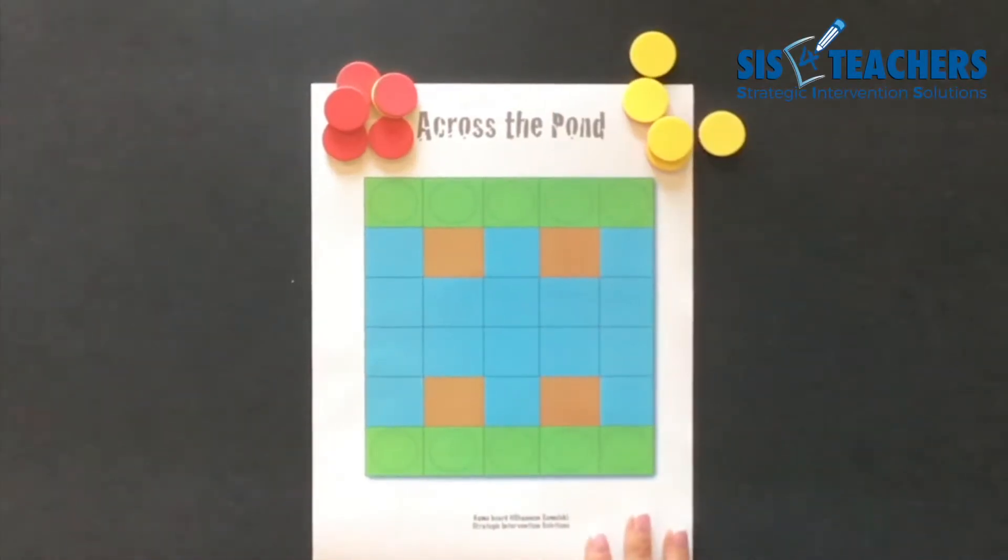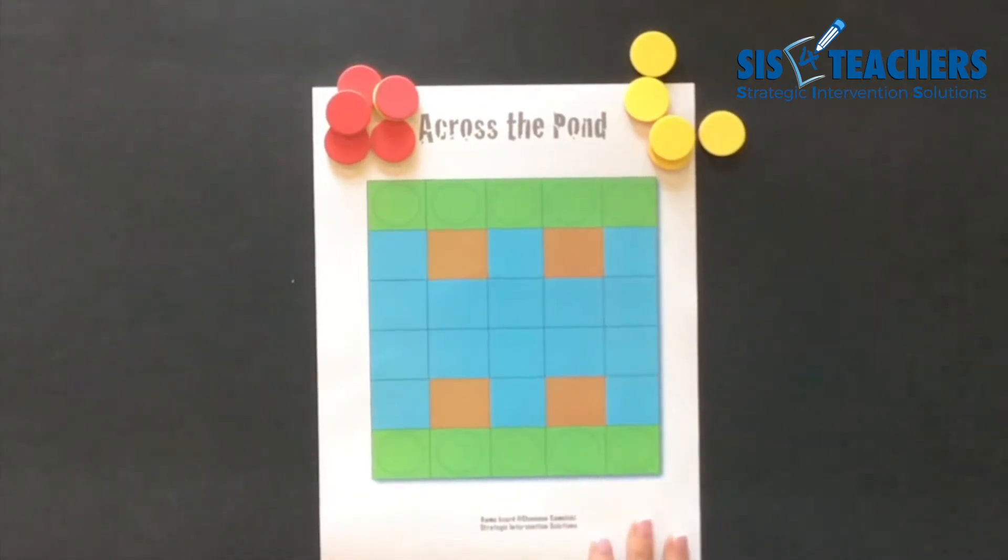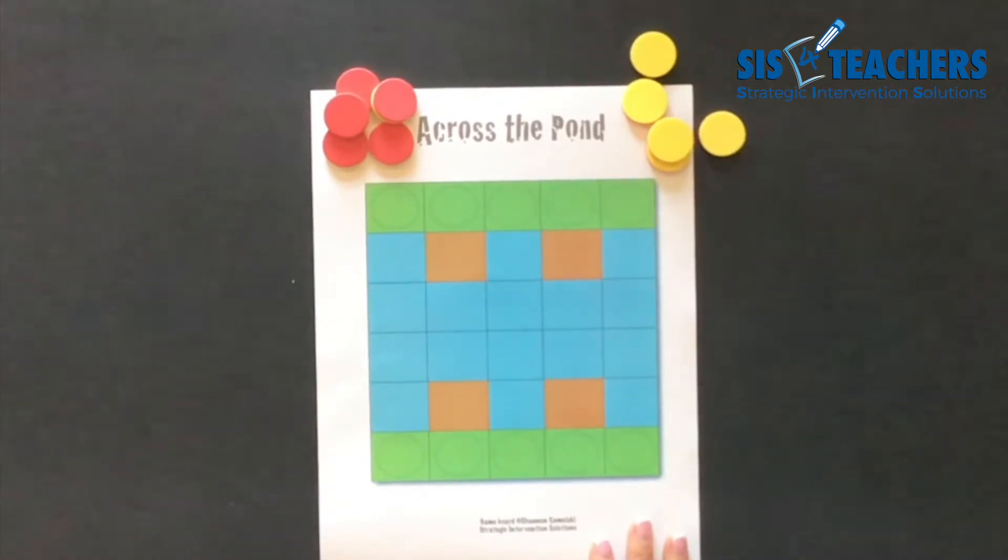Today we're going to show you how to do a game called Across the Pond. It's part of our collection of strategy games that you can find on our website that is on sale to get 15 games for only $10 that can bring strategies into your classroom.